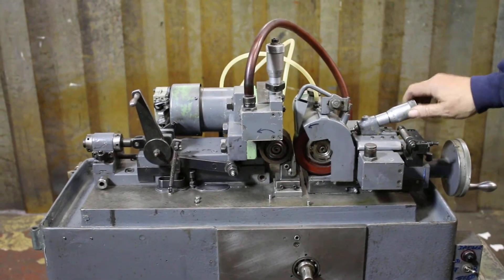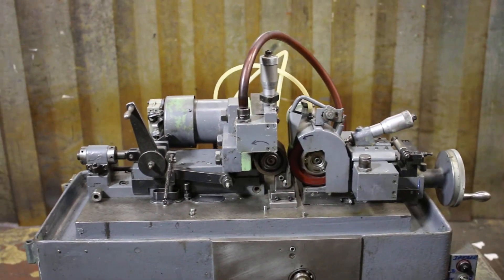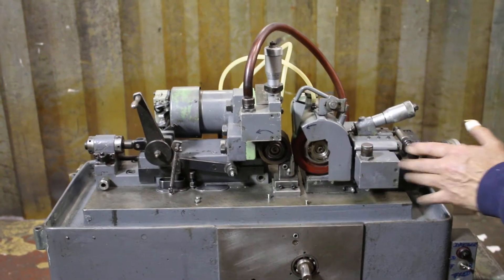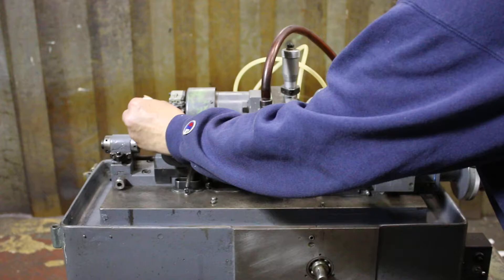This is the dresser for the regulating wheel, and this for the grinding wheel. This is the infeed slide. Your setup infeed comes from here, and then your grinding is done through the motion.